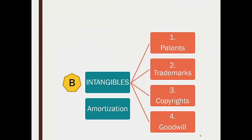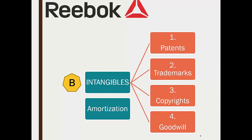Another kind of asset is an intangible — this could be a patent, trademark, copyright, or goodwill. A great example of a trademark is the Reebok logo: just seeing that red triangle lets you identify the brand. Intangibles are not really depreciated because they're not losing their value the way a delivery truck does when we use it. Instead, we do what's called amortization.